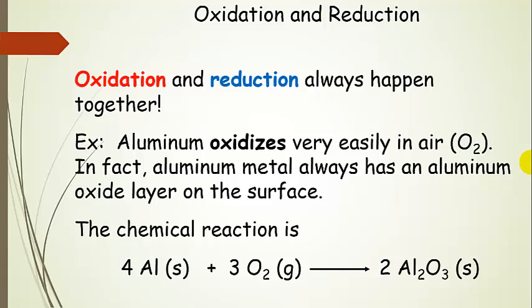Oxidation and reduction always have to happen together, even if you can't see it right away. So let's look at an example — aluminum. Any aluminum you have around your house, like aluminum foil or an aluminum pan, has an aluminum oxide layer on the surface. Aluminum oxidizes very easily in air, and that's why this happens.